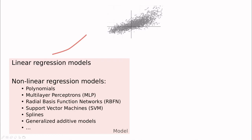The first thing we have to ask ourselves is what type of model are we going to use. We're going to start with a very simple model — linear regression models, in which this line is going to be replaced by a straight line. But of course we have more sophisticated things like polynomial regression. We're going to talk about neural networks again, radial basis neural networks, support vector machines for numerical variables, splines, generalized additive models, and so on and so forth.